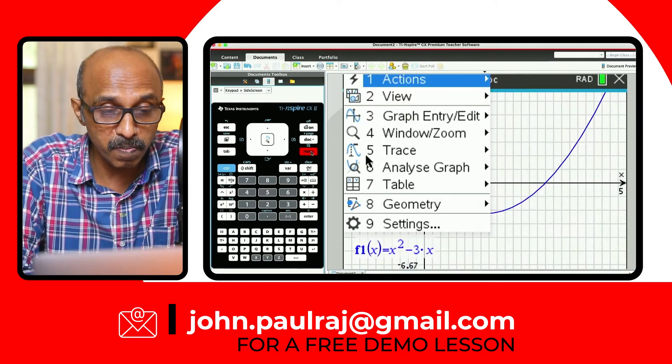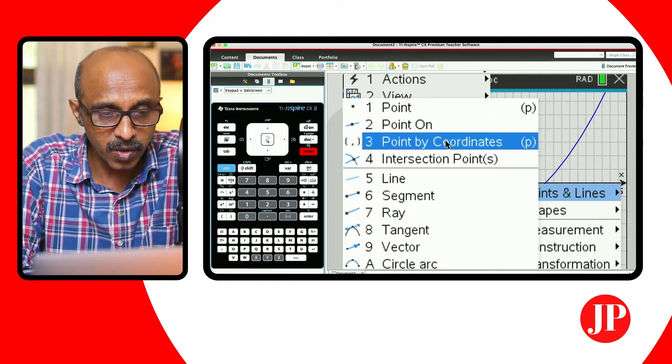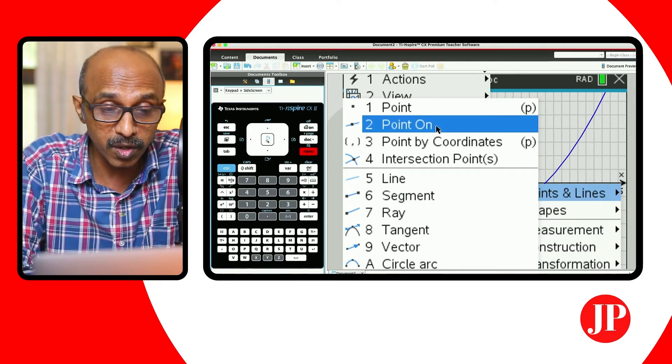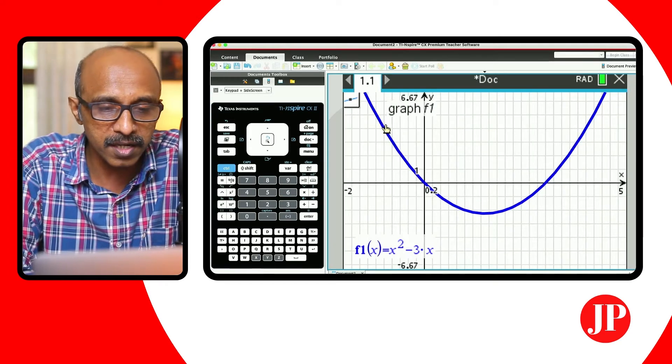And now we want to draw the tangent at the point x is equal to 3. So we are going to go to menu and under geometry, points and lines, there are three possibilities: point, point on, and point by coordinates. Each of them has got a unique role. We are going to choose point on, which literally means that it's a point on the curve.